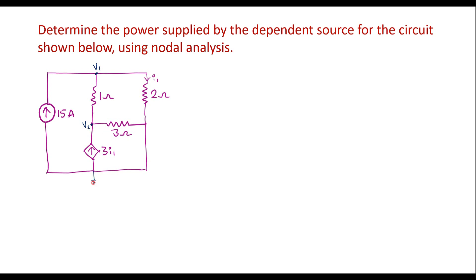This node is the reference node with voltage zero, which we call VR. This node and the other node are both connected and shorted to this point, so both are reference nodes. The dependent source is a current-dependent current source, dependent on current I1.